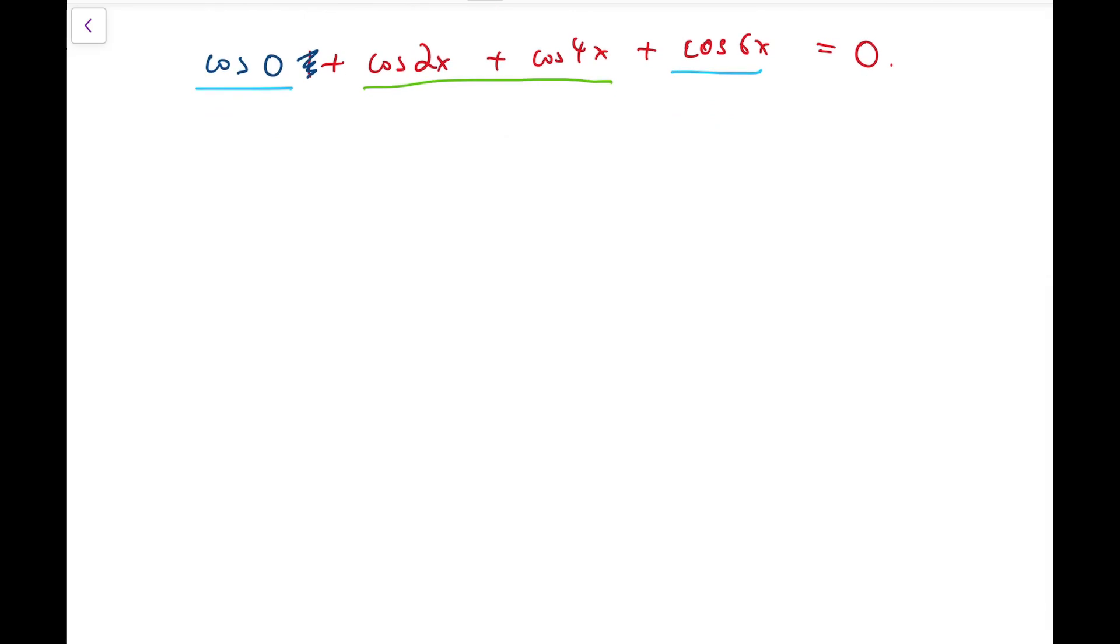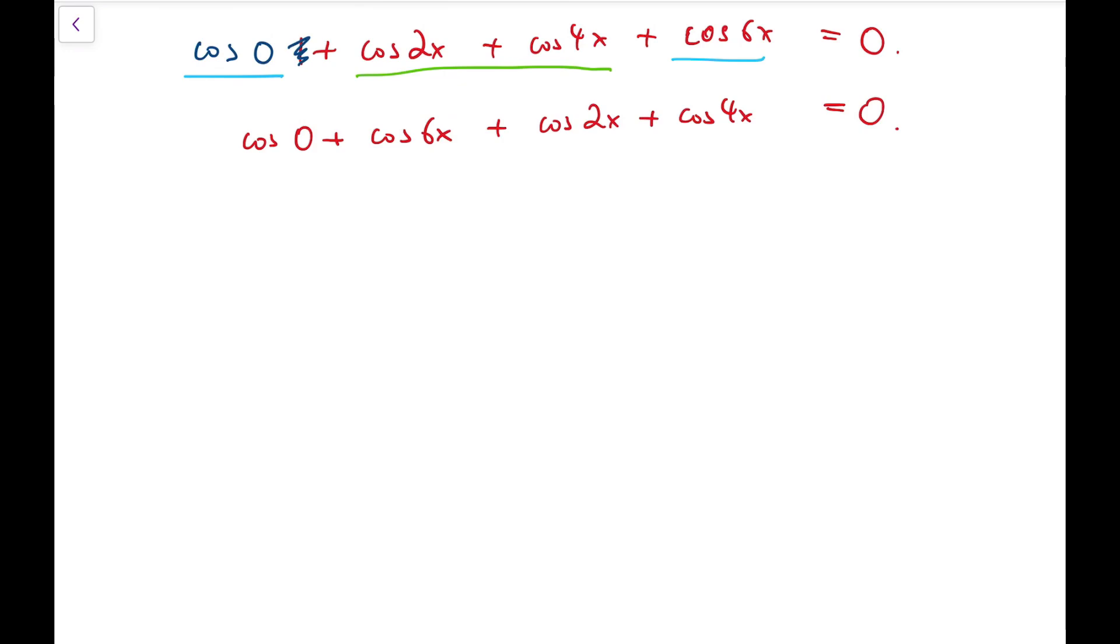At this point, I'll use the sum-to-product formula. I'm going to regroup the terms first. We write 0 as 3x - 3x. I choose 3x because it's the average of 0 and 6x, and also the average of 2x and 4x.